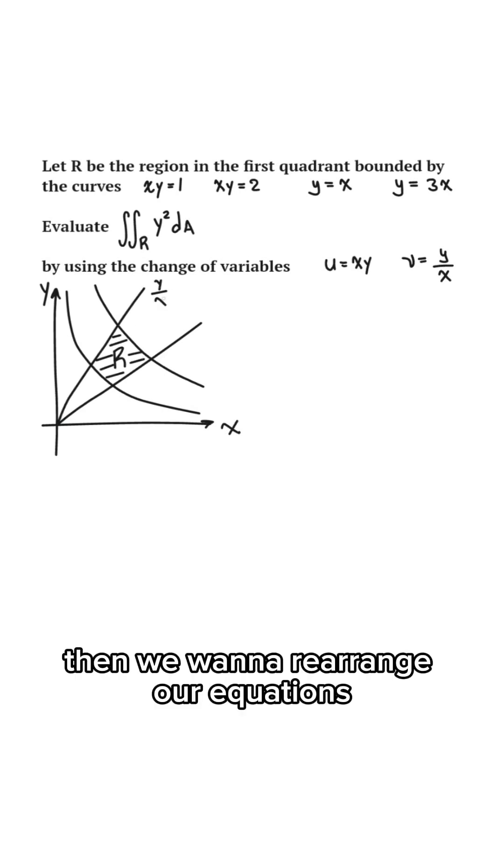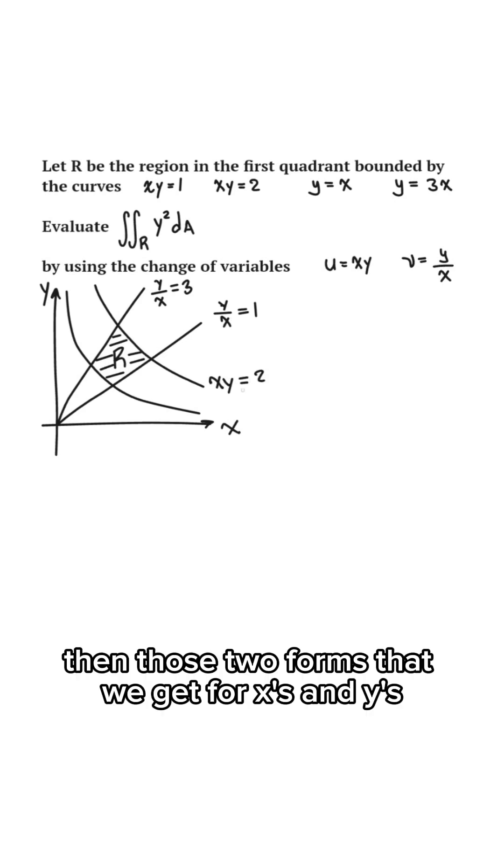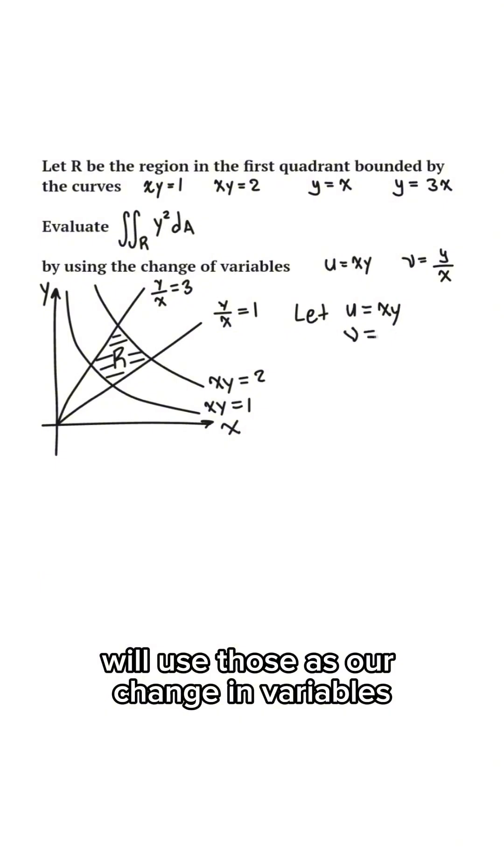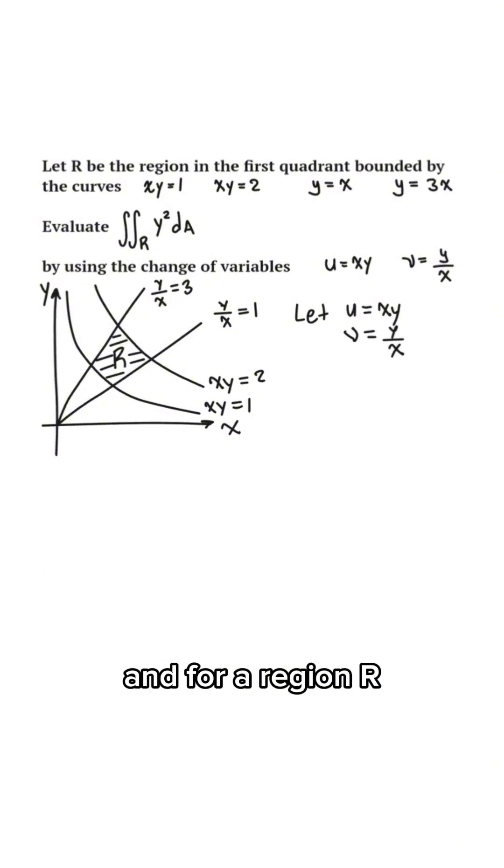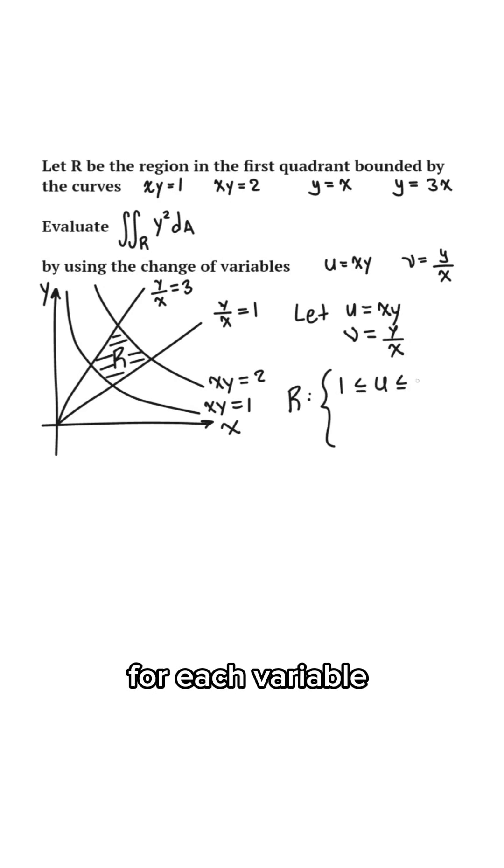Then we want to rearrange our equations so we get variables on the left and numbers on the right. Then those two forms that we get for x's and y's, we'll use those as our change in variables, and for a region R, that will just go in between the two sets of numbers that we have for each variable.